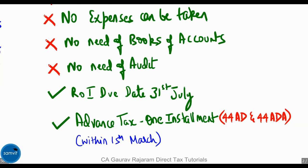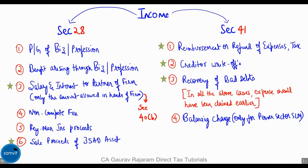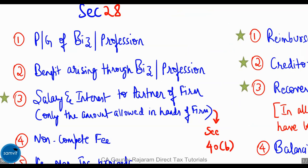Let's look at the income sections first. Under Section 28 there are numerous items which get taxed; I will be discussing only the most important ones which come in total income problems. The first one is any profit or gain from business or profession. The second one is any benefit arising through the business or profession. The third one is salary or interest to a partner of a firm.